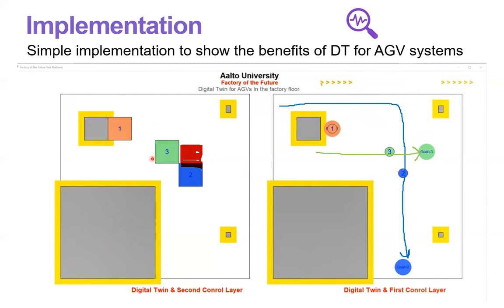Here on the left side, we have the zone-based view for our AGVs, for our factory floor model. And we can see which AGV is where or the obstacle located in which position.